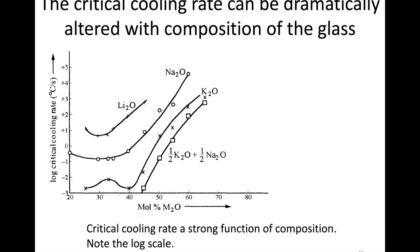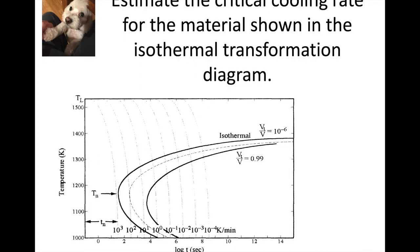This critical cooling rate can be altered as you might expect by the composition. These are the log critical cooling rate versus the amount of stuff that we're adding - here we're adding lithium oxide, sodium oxide, potassium oxide and mixtures. Because this is a log scale, the critical cooling rate is a heavy or strong function of composition. We can really adjust this cooling rate by adjusting the composition of a glass, so that's one of the tools that we can use to get around a critical cooling rate that's too fast for our operation.